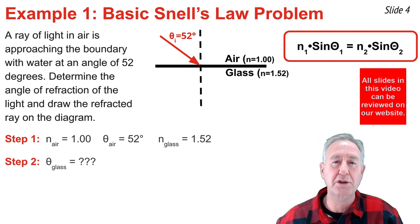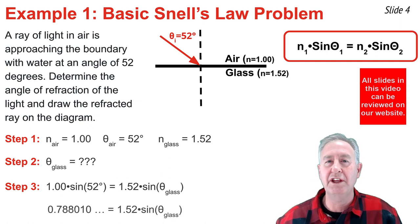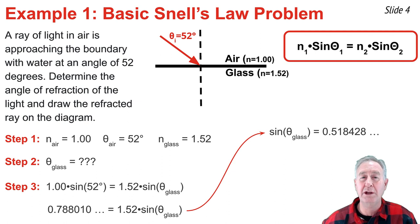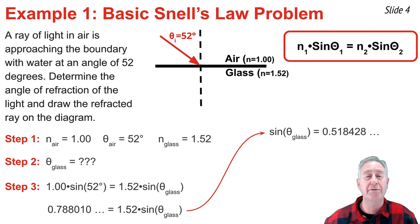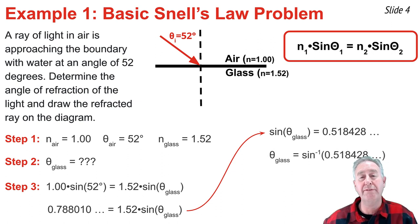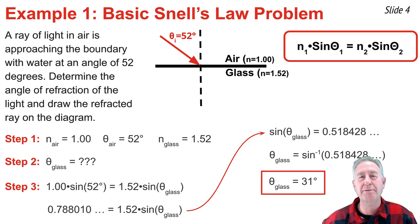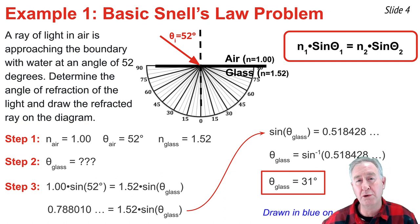I take the three known values and substitute them into Snell's Law equation, then solve algebraically for the angle in glass. I evaluate the left side of the equation and divide by 1.52. Now I want to know what angle in glass has a sine value of 0.518428. To do that, I use the inverse sine function — that's usually two buttons on your calculator, the second button and the sine button. I find that the angle in glass is 31 degrees. It's important not to round until the final answer, and then round to the proper number of significant digits.